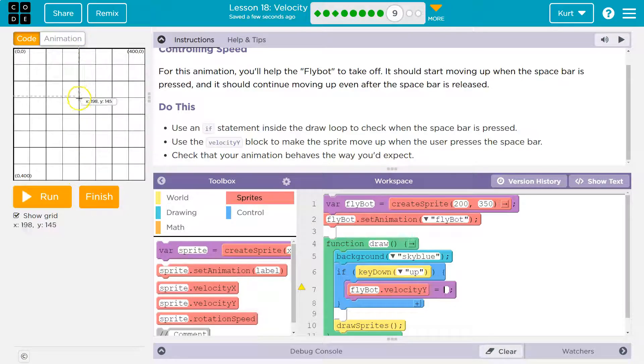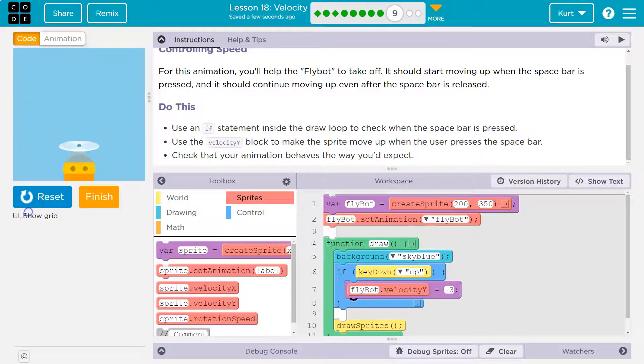So to take away, obviously, we're going to use a negative number. And keep in mind, FlyBot.VelocityY is just like saying FlyBot.Y equals FlyBot.Y minus three. I'm going to use three for my speed. It would be the same thing. This is just a shorthand of saying that.